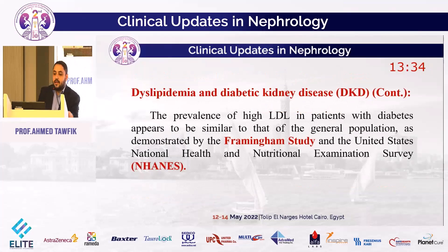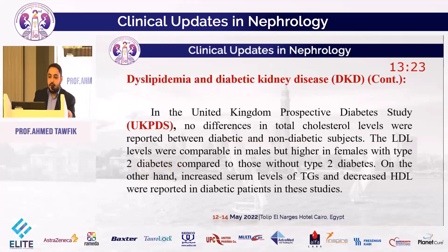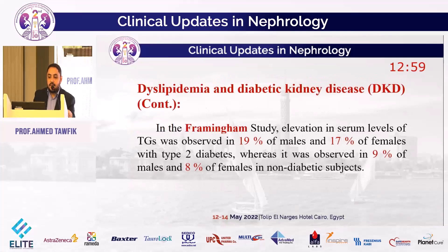The prevalence of high LDL in patients with diabetes appears similar to the general population, as demonstrated by the Birmingham study and the US NHANES. The UK Prospective Diabetes Study (UKPDS) reported no difference in total cholesterol between diabetic and non-diabetic subjects; LDL levels were comparable in males but higher in females with type 2 diabetes. Increased serum triglycerides and decreased HDL were reported in diabetic patients. Triglyceride elevation was observed in 19% of males and 17% of females with type 2 diabetes, versus 9% of males and 8% of females in non-diabetic subjects.